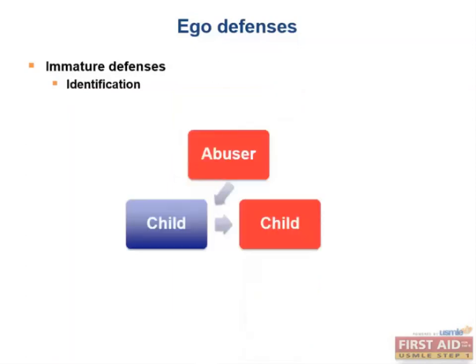Next is identification, a more obscure defense mechanism. It refers to an individual who models their behavior after someone who is thought to be more powerful. An example would be an abused child who gets tattoos after being abused by a person with tattoos. Why would the victim want to model their attacker? First, remember that this is not a conscious process, and secondly, it subconsciously gives the victim a sense of power over their emotional trauma.